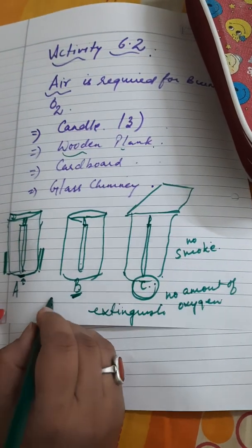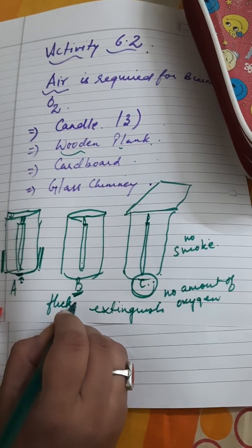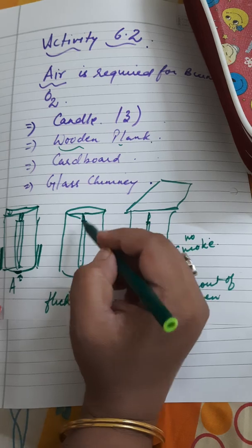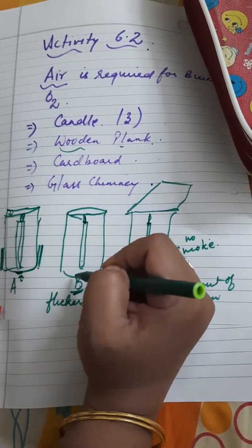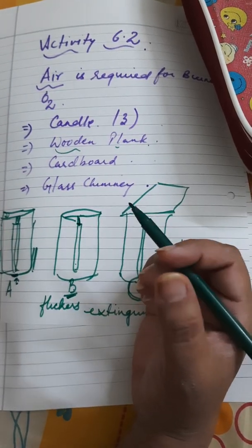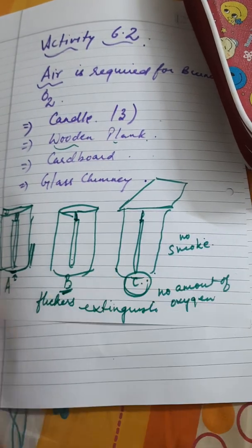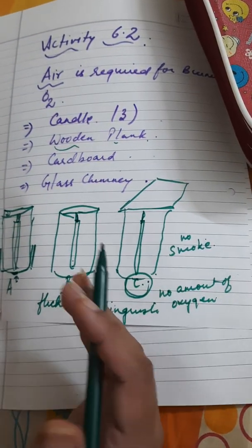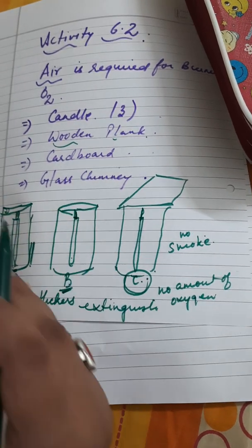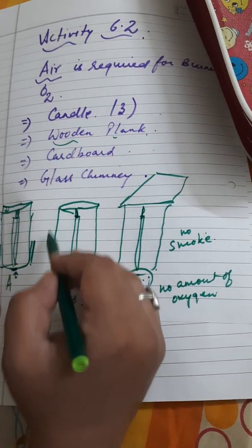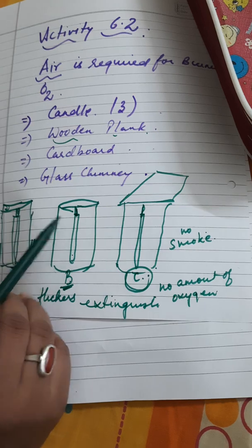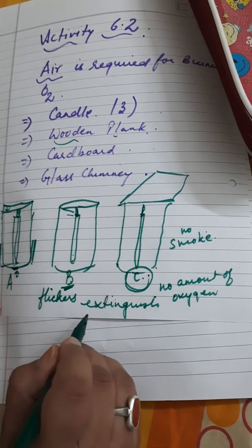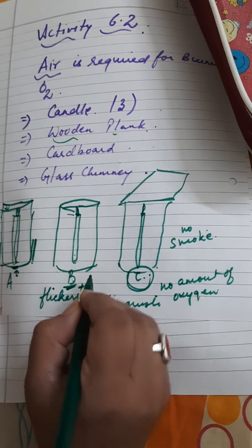Here it will flicker. Flickers means the candle when it is burning, but the flame will flicker. At the last, when proper oxygen has not been received by this combustible substance, then the flame will flicker. It flickers and extinguishes with certain smoke.